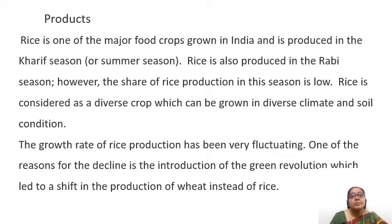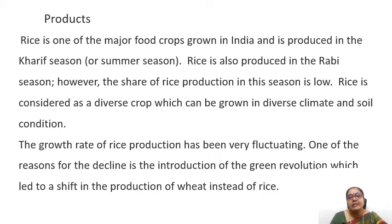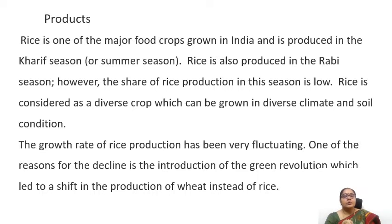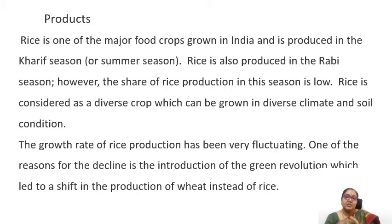However, the share of rice production in the Rabi season is a little less. Rice is considered a diverse crop which can be grown in diverse climate and soil conditions. The growth rate of rice production has been fluctuating, and one of the reasons for this decline is the introduction of the green revolution, which brought a shift in production toward wheat instead of rice. Most farmers thought it would be very beneficial to shift from growing rice to wheat, as they could make more money and have a huge production.